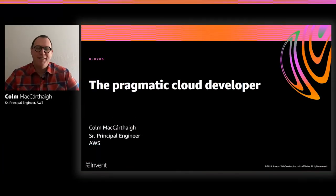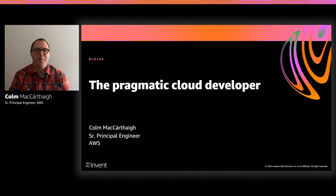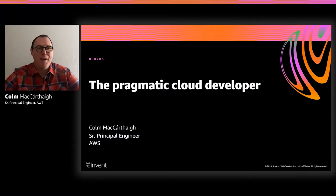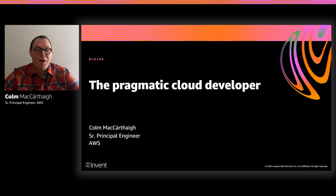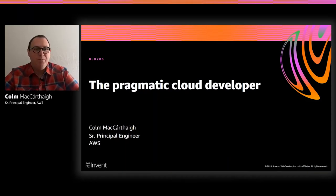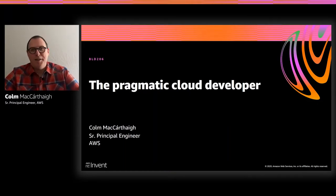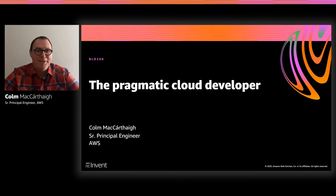Hi, I'm Colin McCarthy. I'm a Senior Principal Engineer here at Amazon Web Services. Today I'm going to talk about being a pragmatic cloud developer. One of my favorite books is called The Pragmatic Programmer, and I'm borrowing a little from its title here. What I want to talk about is how to make decisions about what to use in the cloud or how to architect for the cloud, without being too doctrinal about that.